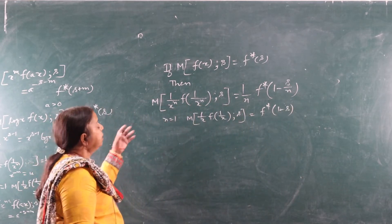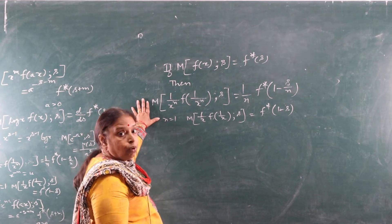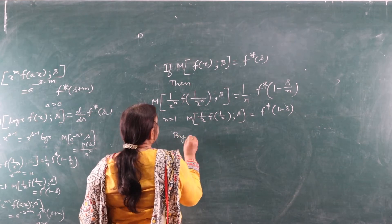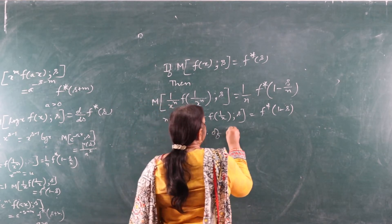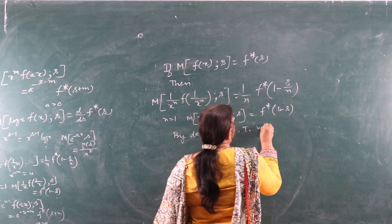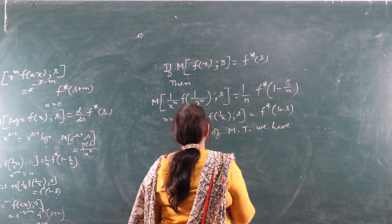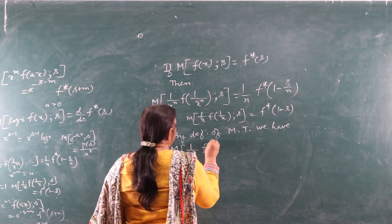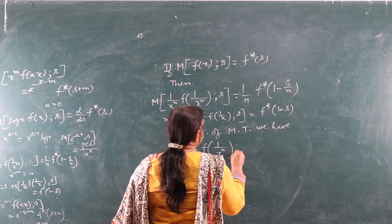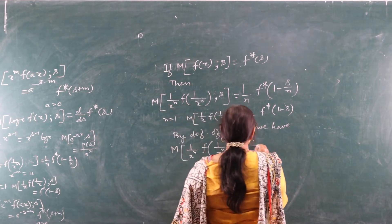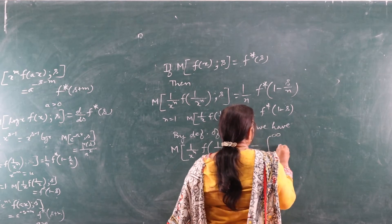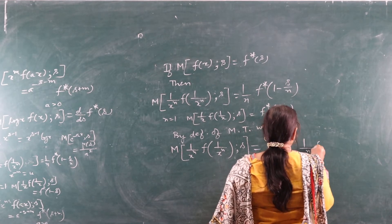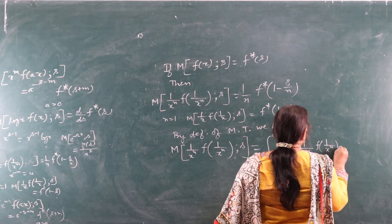These integrals are simple. By definition of the Mellin transform, we have: Mellin transform of (1/x^n)·f(1/x^n) with respect to s is equal to the integral from 0 to infinity of x^(s−1) · (1/x^n) · f(1/x^n) dx.